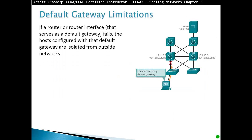Default gateway limitation. If a router or router interface that serves as a default gateway fails, the hosts configured with that default gateway are isolated from the outside network. Imagine this switch is our default gateway — we have configured it as our default. We have another working gateway, but if this interface fails, this PC has no way to reconfigure itself to start using the other gateway. That causes one big problem.